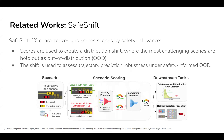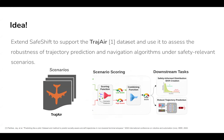For robust trajectory prediction, there is SAFE shift, which characterizes and scores scenes by safety relevance. It creates a distribution shift, and the most challenging scenes are held out as out-of-distribution, and then it uses these scenes to assess trajectory prediction robustness.